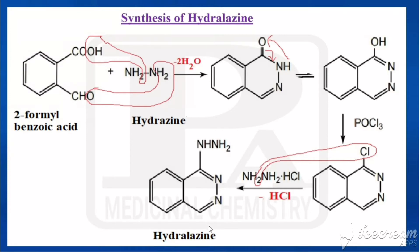To summarize: 2-formylbenzoic acid is treated with hydrazine, removing two molecules of water and undergoing cyclization. The product then undergoes tautomerism, converting from the keto form to the enol form. This is followed by chlorination with POCl3, and finally reaction with hydrazine hydrochloride, removing HCl to give hydralazine.